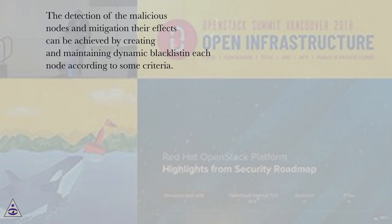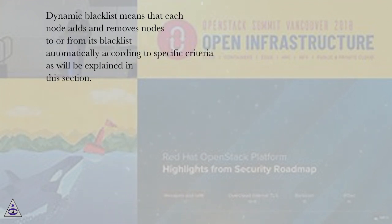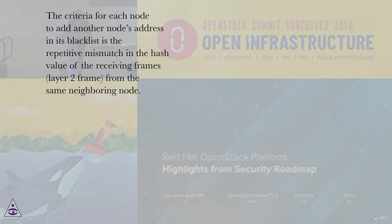The detection of malicious nodes and mitigation of their effects can be achieved by creating and maintaining a dynamic blacklist in each node according to some criteria. Each non-malicious node will prevent sending or forwarding to neighboring nodes that exist in its own blacklist, either in the forward or reverse path. In other words, each node will not use blacklisted nodes as intermediate nodes. Dynamic blacklist means that each node adds and removes nodes to or from its blacklist automatically according to specific criteria.